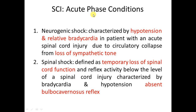Spinal cord injury in the acute state presents as either neurogenic shock or spinal shock, both manifested by hypotension and bradycardia. Spinal shock is very important because you cannot detect the neurological level until this period is finished. The hallmark of the end of spinal shock is the return of the bulbocavernosus reflex, or the passage of two to three days from the time of injury.